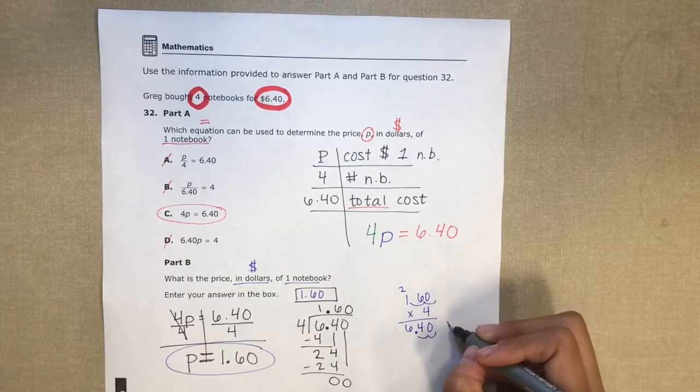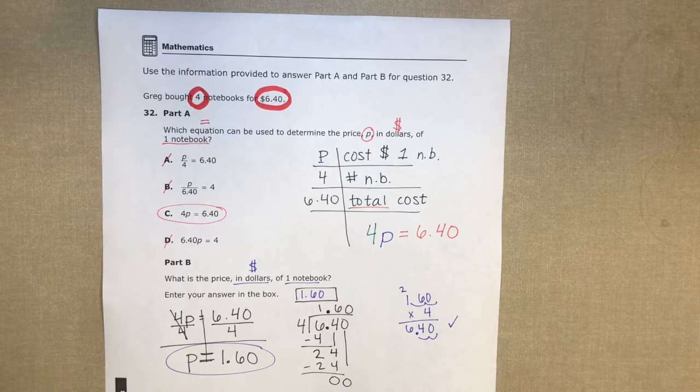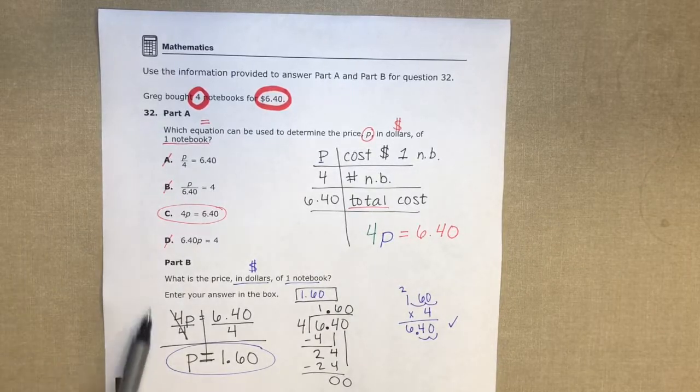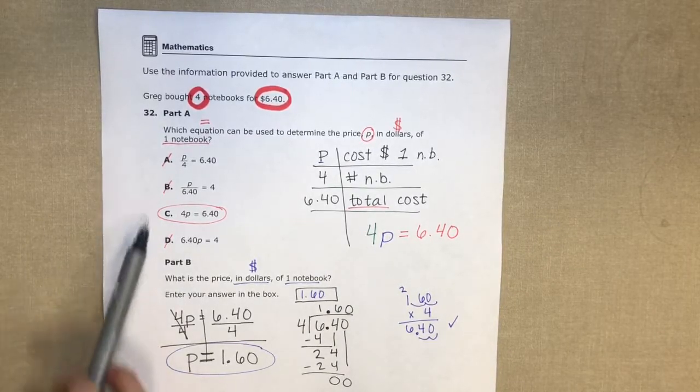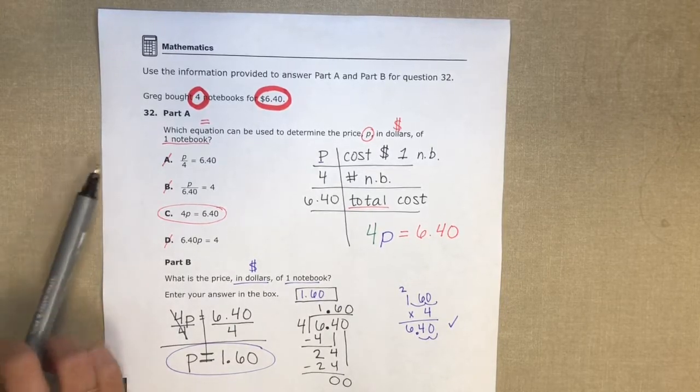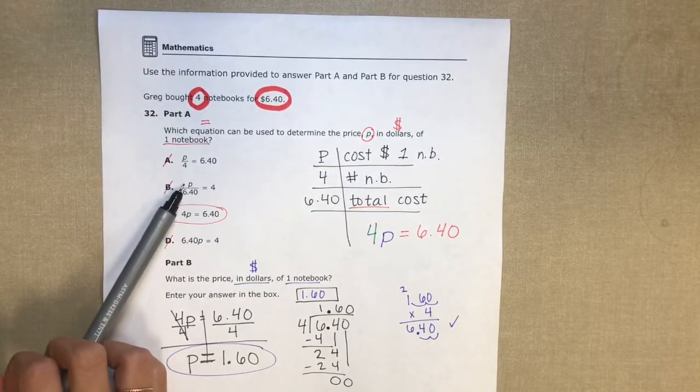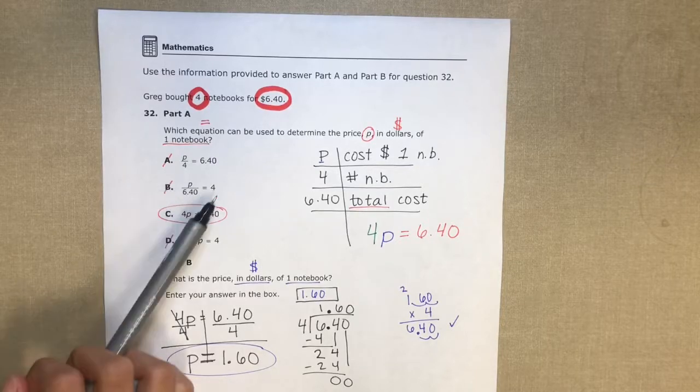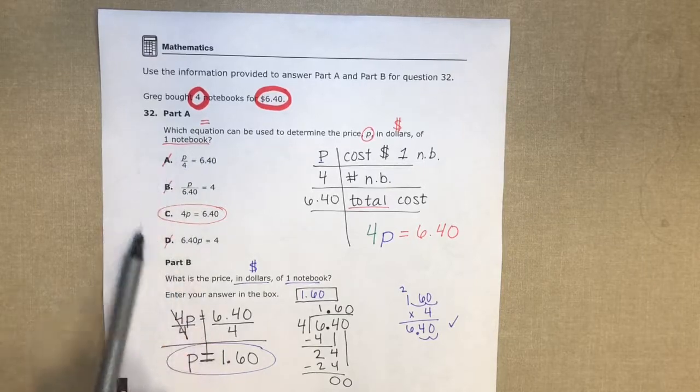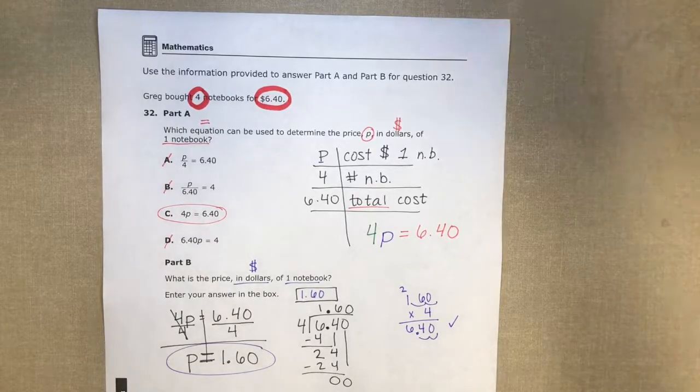One important thing to remember with these two-part questions is that you could still get credit for Part B if you solved correctly for whatever answer you picked up here for Part A. So even if you chose the incorrect answer for Part A, if you solved the equation correctly and found the value of P for the equation that you chose, you would still get credit for Part B. So even if you're unsure, it's always good to still go ahead and solve Part B because you can at least get partial credit for your answer.